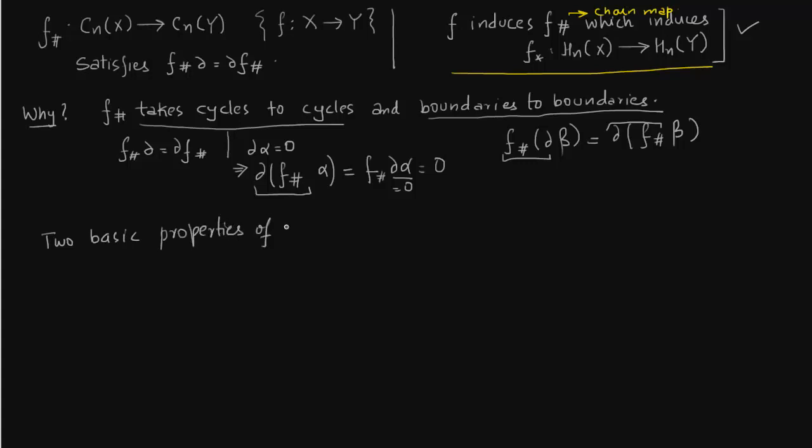Two basic and very important properties of induced homomorphisms are the following. We have a map from space X to Y, then a map from space Y to Z. What should be the relationship between the homology groups of space X and homology groups of Z? First, we write our relationship X, Y, and Z. I'm writing delta in the front to have chain maps properly defined. So f and g: f is from Y to Z and g is from X to Y.